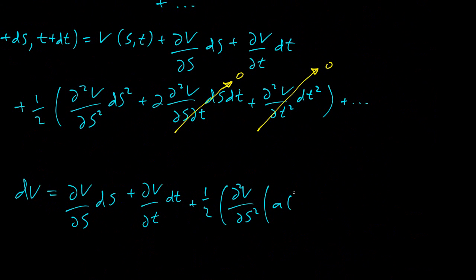And so squaring that, we'll get a(S,t) squared DT squared, plus two a(S,t) b(S,t) DT DX, plus b(S,t) squared DX squared.